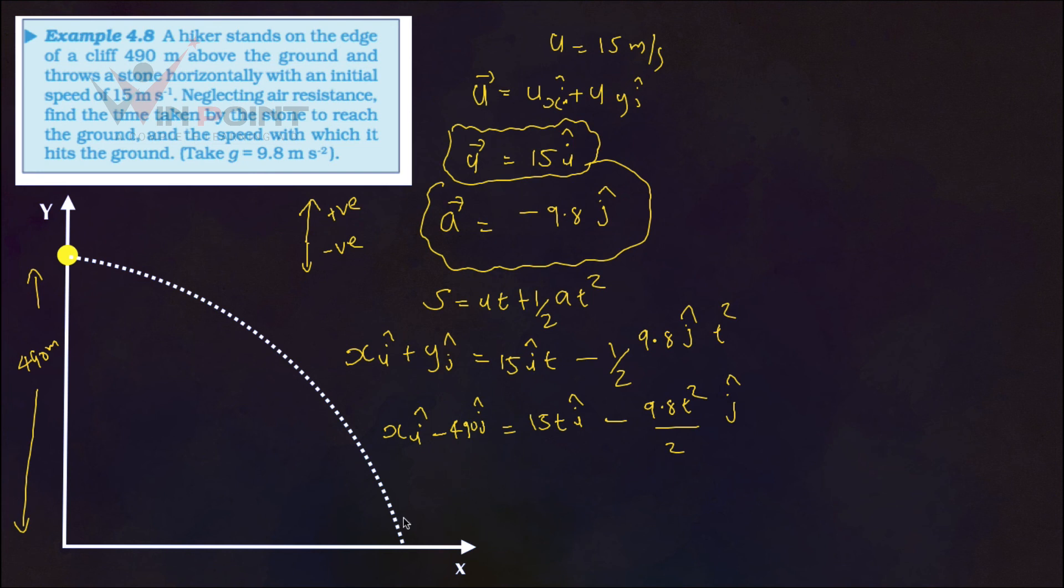Now we are going to compare these two equations. Minus 490J, it is minus 9.8 T square by 2J. We are comparing this one. From here, we can write x equals 15T.